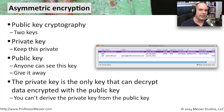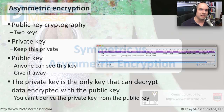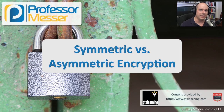Using asymmetric encryption really gives us new ways of encrypting data, keeping that data safe, and making sure that nobody can get their hands on that information. And when you combine asymmetric encryption with symmetric encryption, you really have a lot of flexibility with how you're going to encrypt the data, send it to someone else, and be able to decrypt it on the other side.